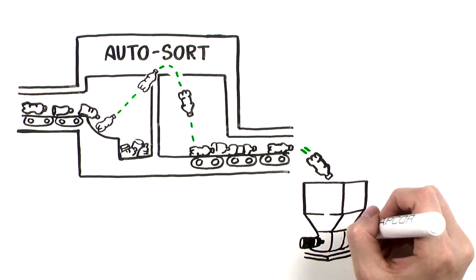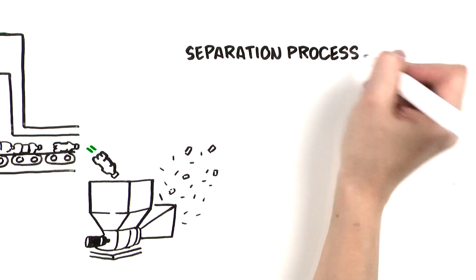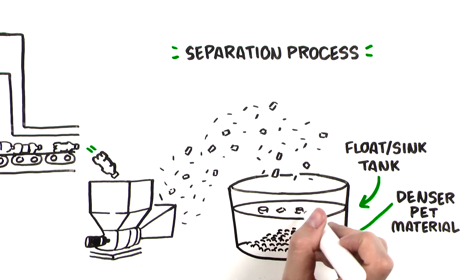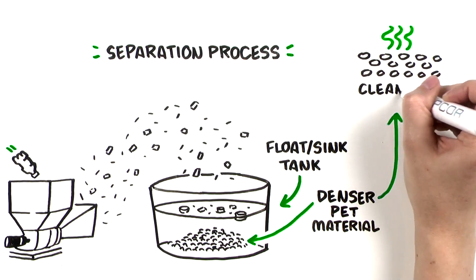The PET is then ground and put through a separation process, often a float sink tank. The denser PET material sinks. It's separated from the floating cap and label material, then cleaned and dried.